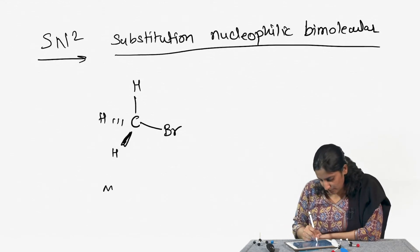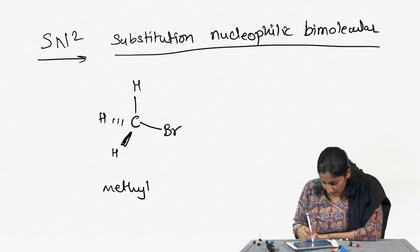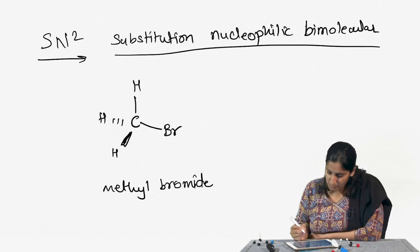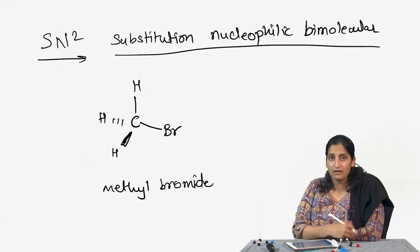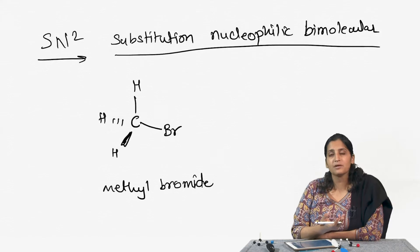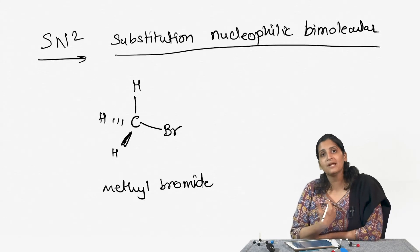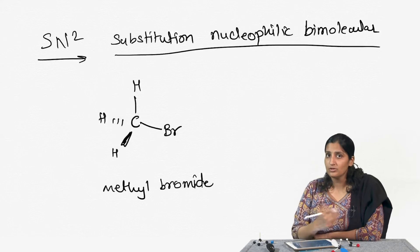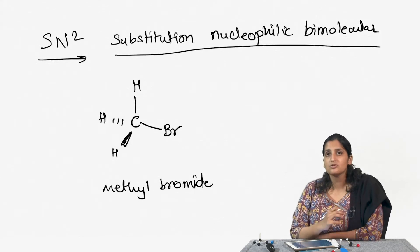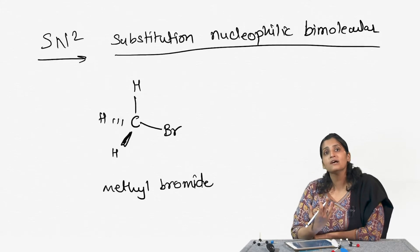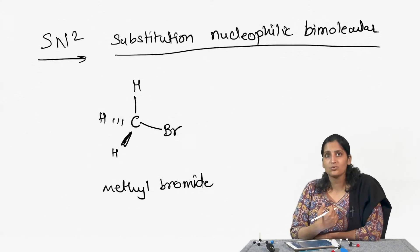Consider methyl bromide. When methyl bromide was put with hydroxide, it was thought that it would not react because methyl is not going to create a carbocation. But instead we observe that hydroxide quickly replaces that bromine to do a substitution reaction. So the reaction mechanism has to be different from what the SN1 reaction goes through.